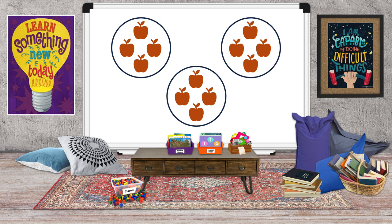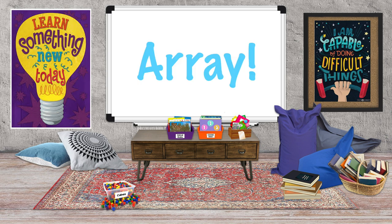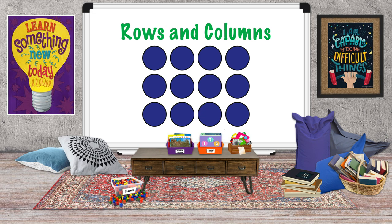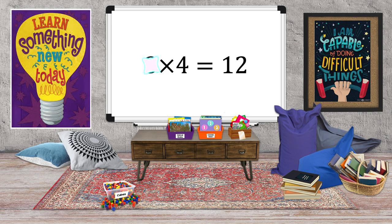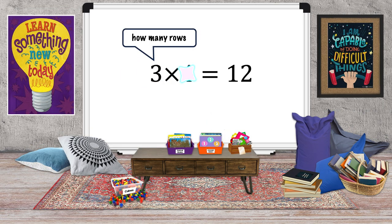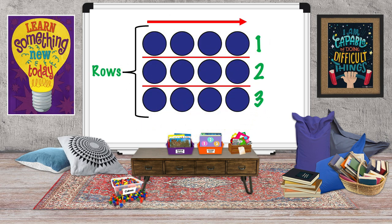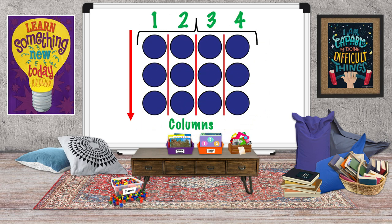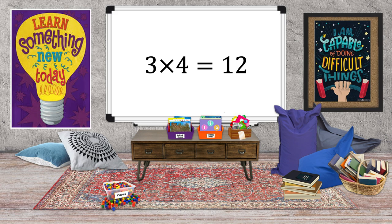Let's add them: four, eight, twelve — three times four equals twelve. Now let's show that sentence as an array. Arrays are made up of rows and columns. Rows go across; columns go up and down. Using the equation three times four equals twelve, our first factor tells us how many rows — three rows — and the second factor tells us how many columns — four columns. Our array looks like this. Let's skip count to check: four, eight, twelve. Three times four equals twelve.